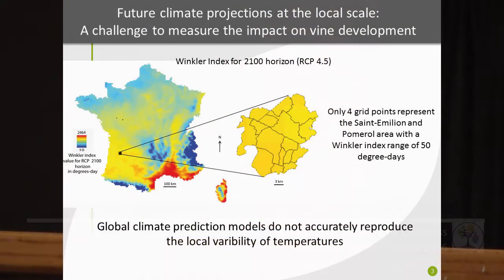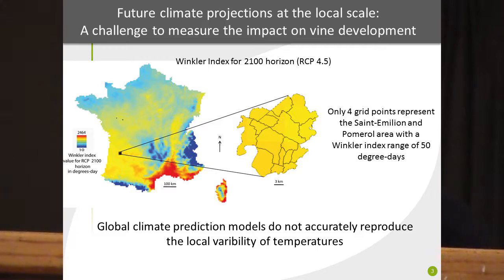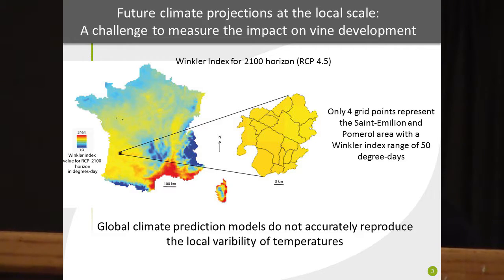It is very important to study future climate projections at the local scale, and it is a challenge to measure the impact on vine development. The Aladin model results for the Winkler index at the 2100 horizon with an RCP 4.5 scenario show that in the Saint-Emilion area, just four grid points represent the area with a Winkler index range of only 50 degrees. Global climate prediction models do not accurately reproduce local temperature variability, so we need to downscale these projections using, for example, statistical models.